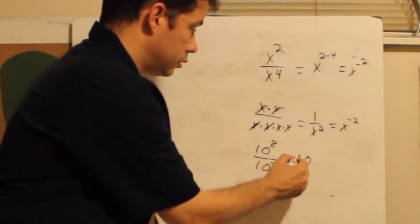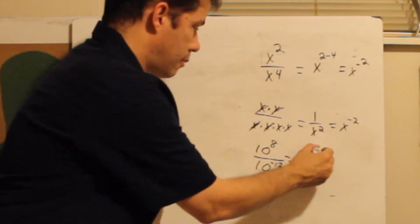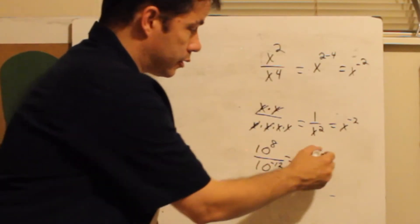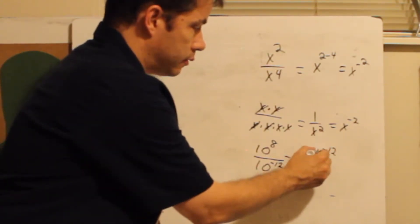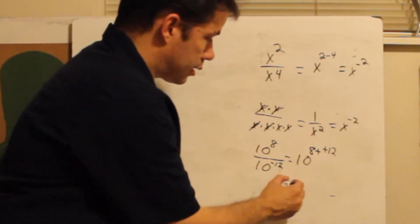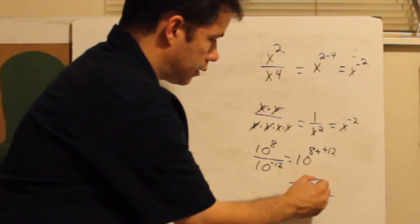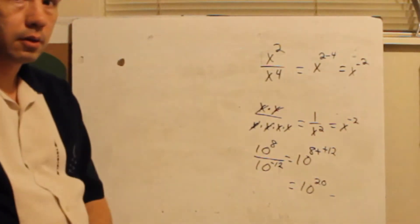So 10, 8 minus what's this? Negative 12. So I've got to write the negative 12. If I minus a negative, it's the same as adding it, right? So that's actually going to be equal to 10 to the 20.